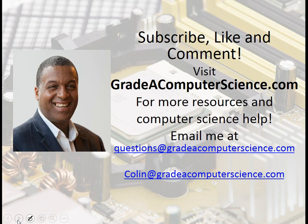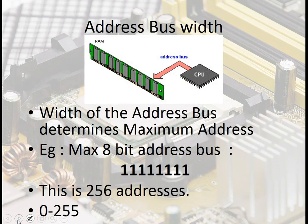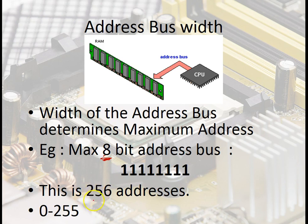The width of the address bus determines the maximum number of addressable memory locations. For instance, with 8 bits — all ones — you get 256 addresses that are addressable, linking to the data held in memory.